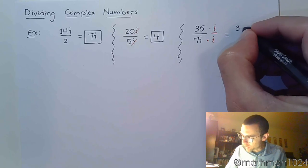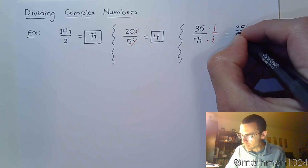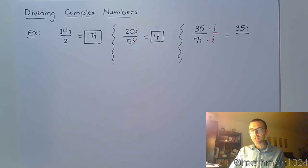What we do is we multiply both the numerator and denominator times the factor of i. You may be saying, that's dumb. It's just making it worse. Well, let's see what happens here. In the numerator, we get 35i. So, yeah, it made the numerator worse. But look what happens in the denominator.